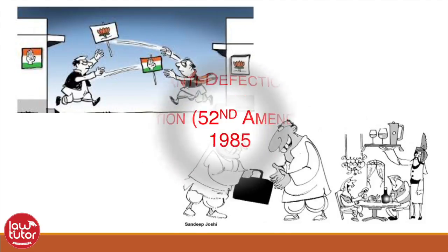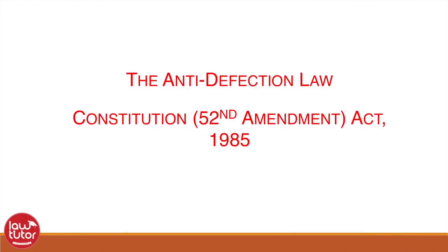That's why, in 1985, the constitution was amended for the 52nd time by adding the 10th Schedule. The amendment made defection a ground of disqualification and laid down the process by which legislators may be disqualified on that ground. So, if the legislators defected, they would be disqualified as members of the legislature.